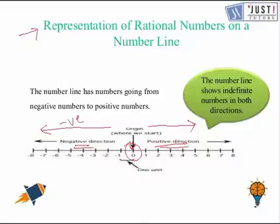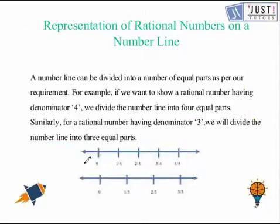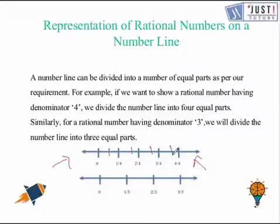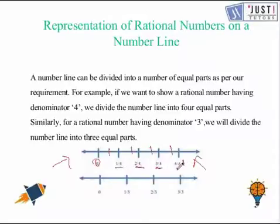We follow the same rule for rational numbers when representing them on a number line. Here, the number line is divided into four equal parts from zero to one. The rational numbers in between would be one over four, two over four, three over four, and four over four, which is the same as one.